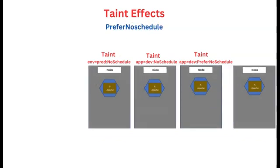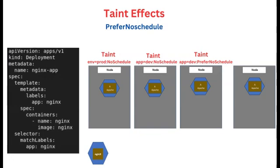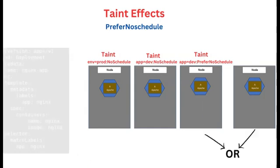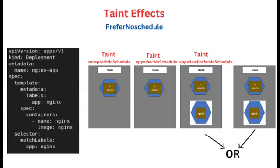What is the prefer-no-schedule taint effect? When a new pod is created that is not tolerated to run on a tainted node, the scheduler will try to avoid scheduling it there, but the pod can still be scheduled on a node with the prefer-no-schedule effect. That's why this taint effect is called a 'soft taint.' Existing running pods on a soft-tainted node will remain and keep running. Finally, the no-execute taint effect — when you taint a node with no-execute, existing pods on the node will be evicted.